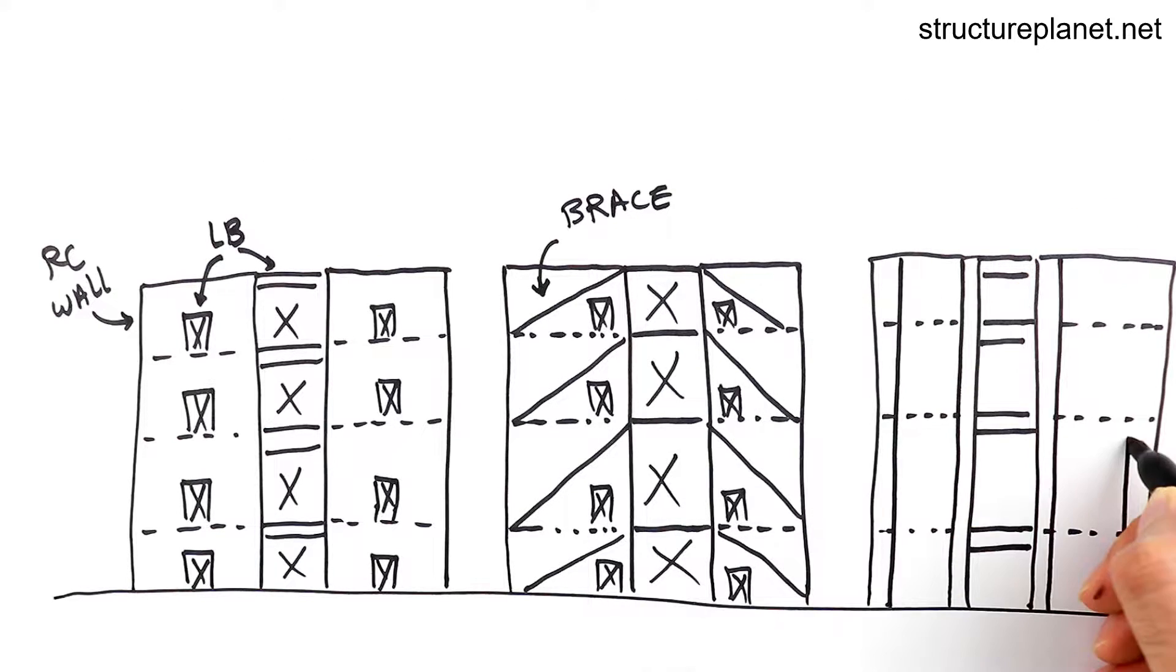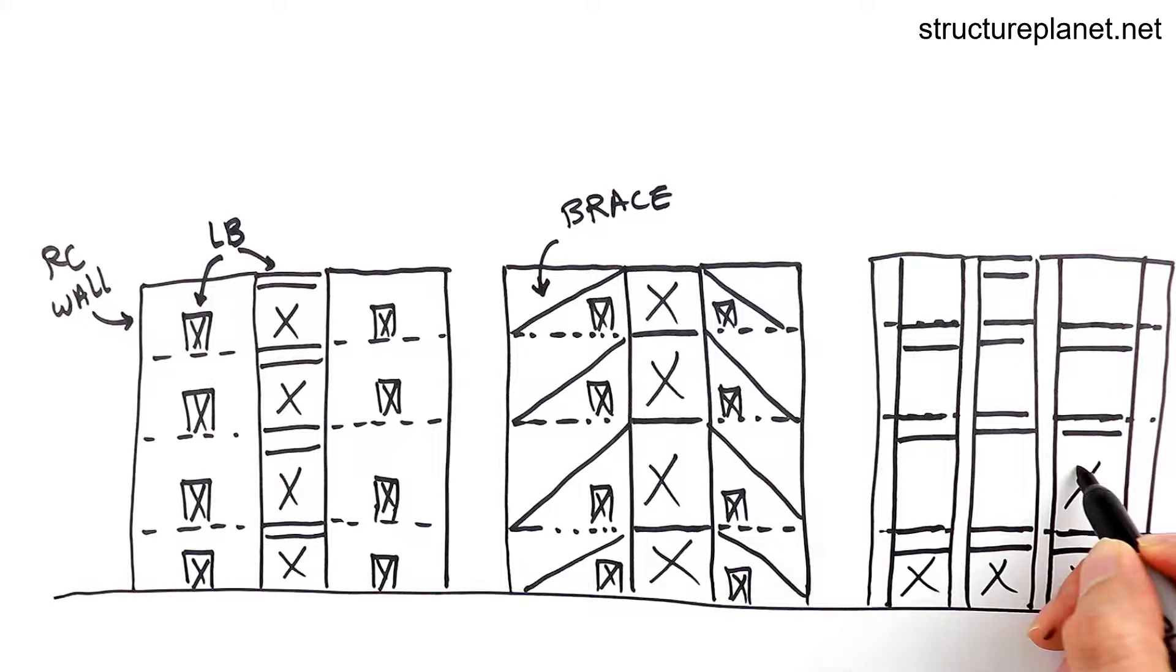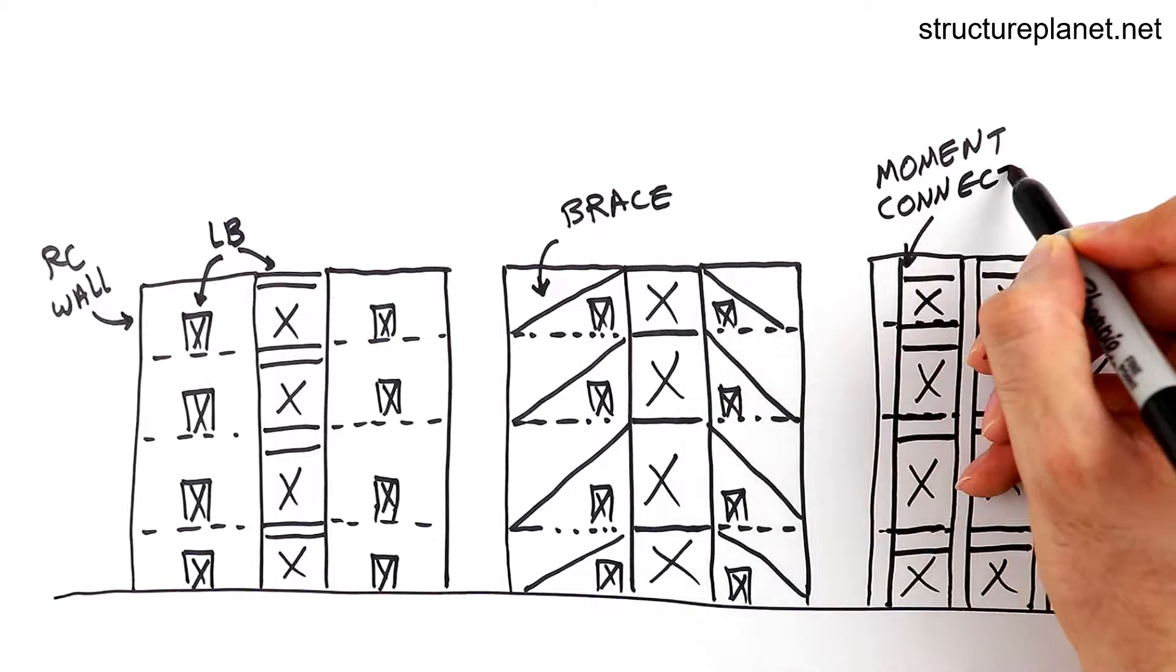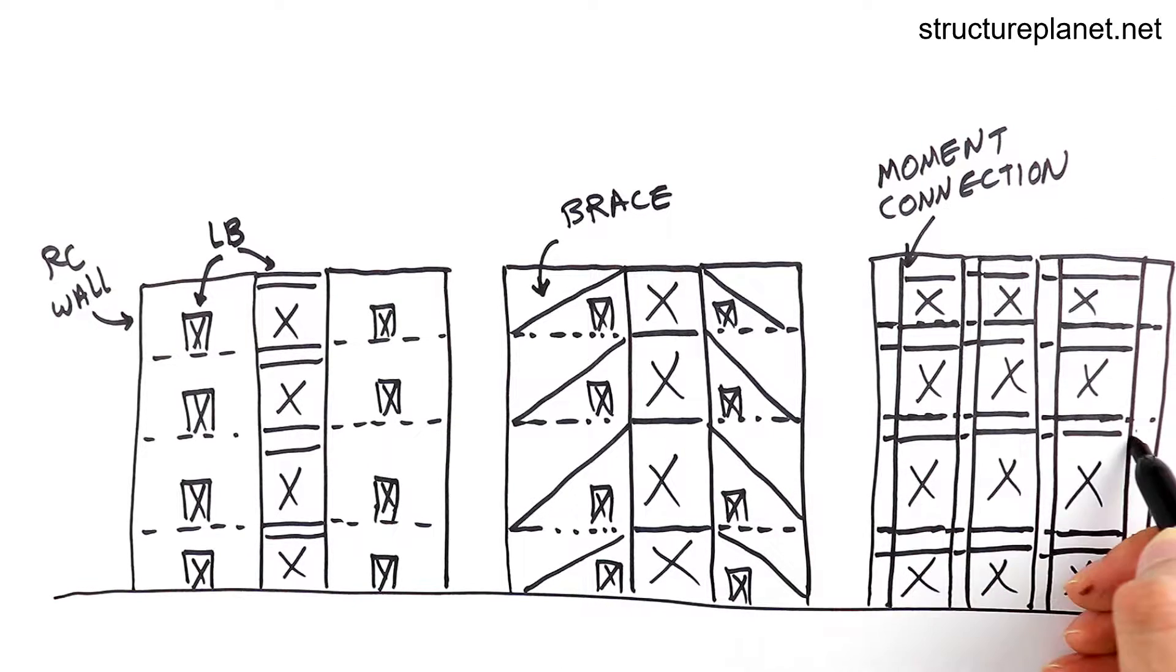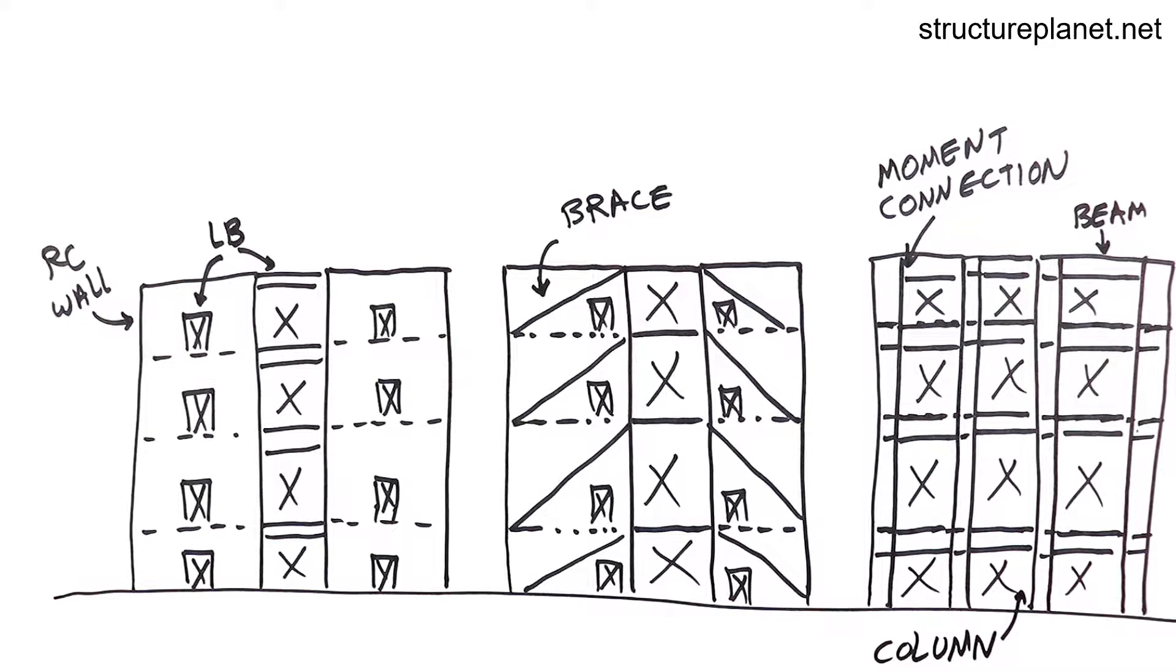Engineers choose a lateral system based on many factors such as architectural requirements, how tall the building is, the magnitude of lateral forces and many others.